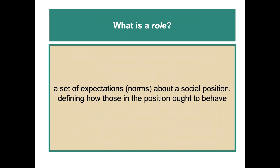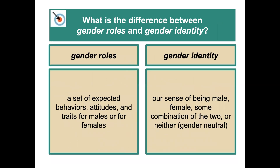A role is a set of expectations or norms about a social position, defining how those in the position ought to behave. So what's the difference between gender roles and gender identity? Gender roles are a set of expected behaviors, attitudes, and traits for males or females. Gender identity is our sense of being male, female, some combination of the two, or neither — which is thought of as gender neutral.